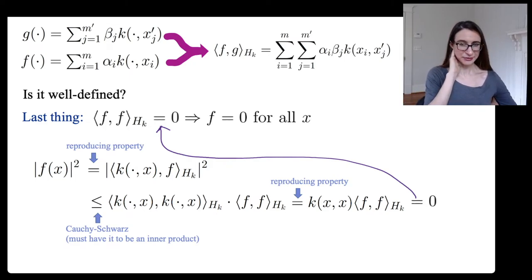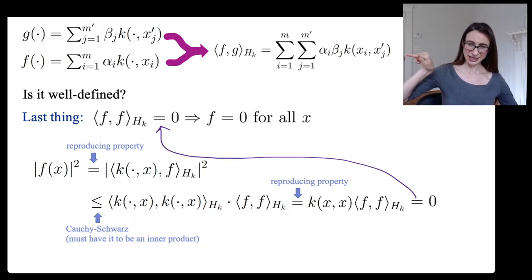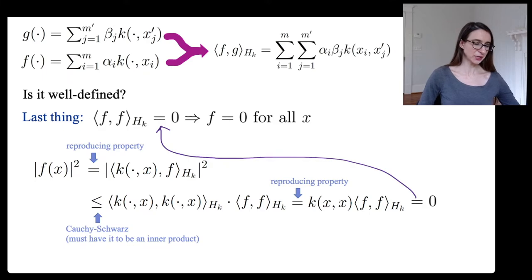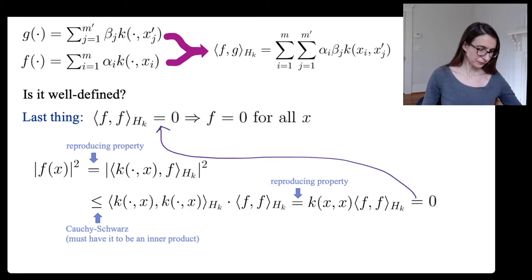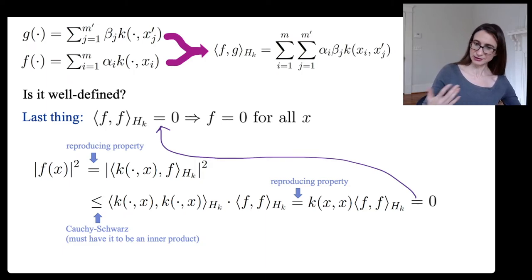I was wondering whether this last property contradicts the gram matrix being positive semi-definite rather than positive definite. It is possible in a trivial situation where kernel functions are equal and opposite and cancel out, making rows of the gram matrix negate each other. In any case, we shouldn't worry about that in practice. We've proven the last piece and can say the inner product is well-defined.